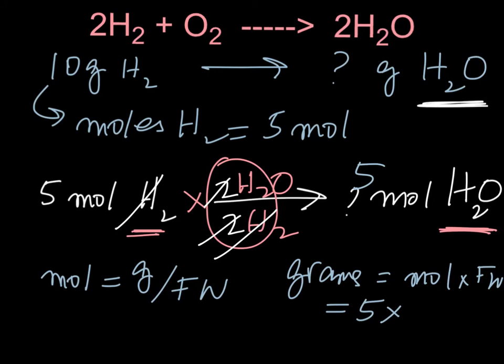And the formula weight of H2O. Please note, we are not looking at 2H2O. We just want H2O. The formula weight of H2O is 16 for oxygen plus 2 for hydrogen. And that will give us 18, and 5 times 18 is 90 grams of H2O. That's how we do it.